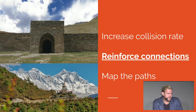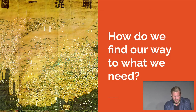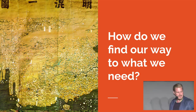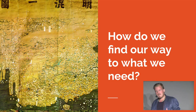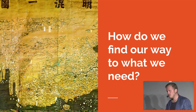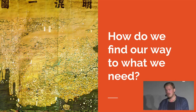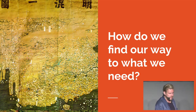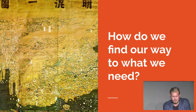Going back to the Silk Road analogy: once paths were out there, you need to map them. As a new person coming into the network, you want to be able to look at them beforehand, especially when they've become sprawling and important. People started mapping the paths from China to Europe. How can we do the same thing in this context?